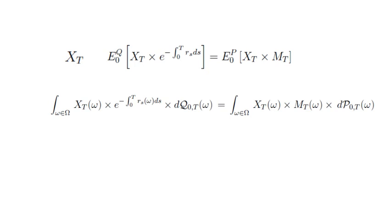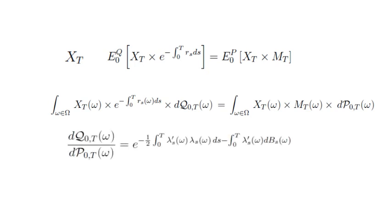The last equation holds state by state. Hence, we can isolate the next relationship, which says that the risk-neutral probability of an event, little w, that happens in capital T, divided by the actual probability of that event to happen in T, equals an exponential martingale in the risk premiums.